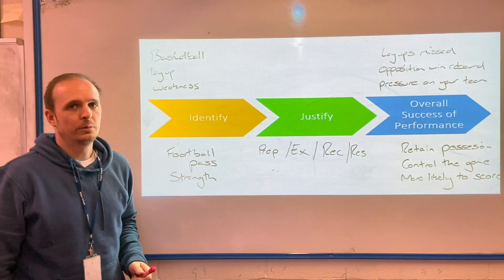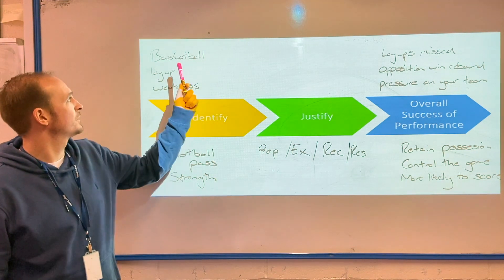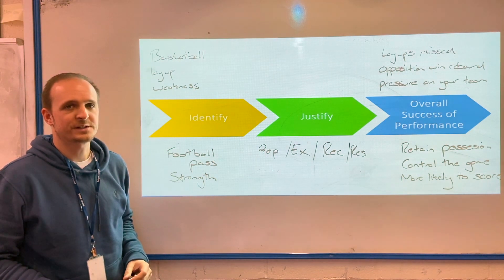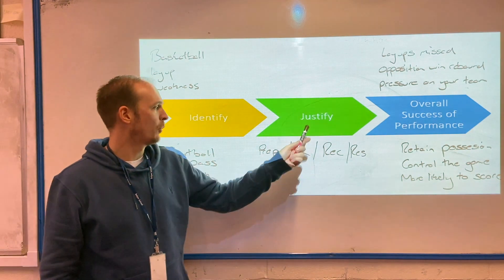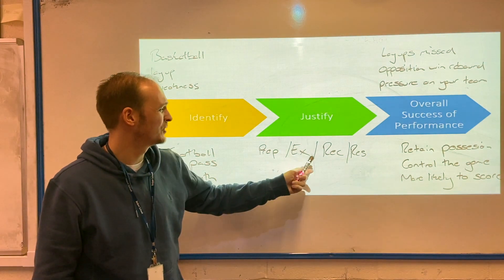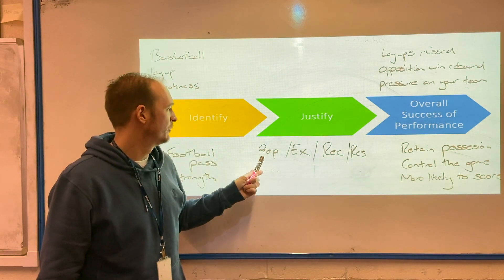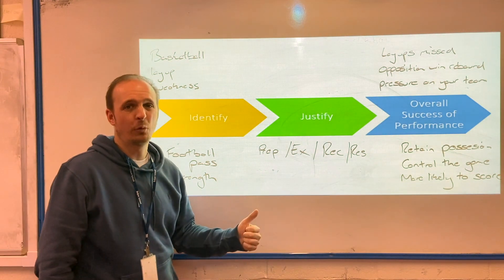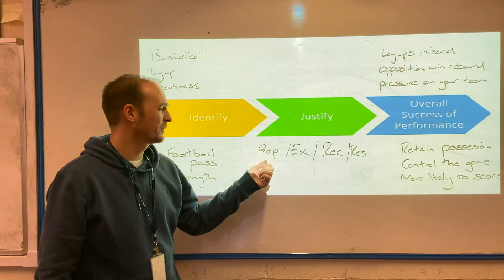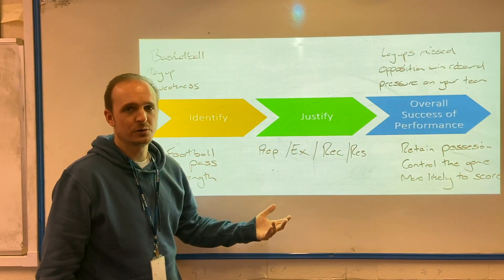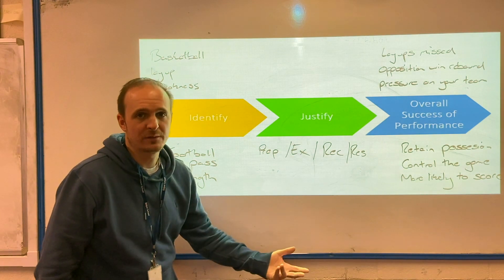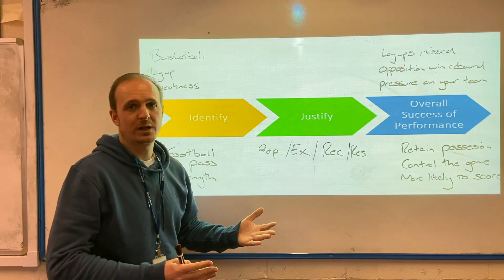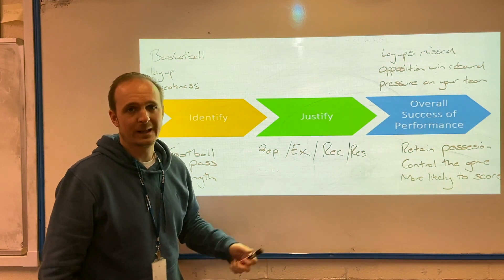Let's look at another skill and look at it in terms of it being a weakness — this time a basketball layup. You may be watching a basketballer and noticed that their layups are unsuccessful much of the time. You've got to justify why: is it down to the preparation phase, the execution phase, the recovery phase, or the result? For this example, we might say it's the preparation phase — perhaps an issue with the player's footwork or their angle of approach into the basket. A junior player might be called for travelling, taking too many steps, or a more seasoned player might have a problem with the approach angle.